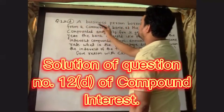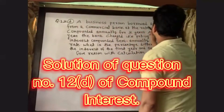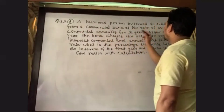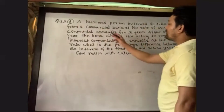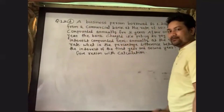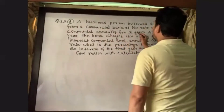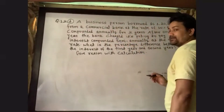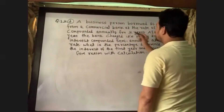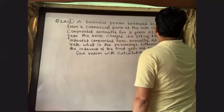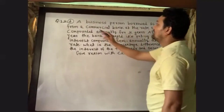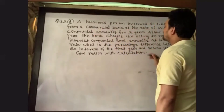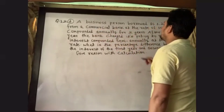In question number 12D, a business person borrowed Rs 1,20,000 from a commercial bank at the rate of 10% per annum compounded annually for 2 years. Rs 1,20,000 is the principal, and the rate of 10% per annum is also given, compounded annually for 2 years.